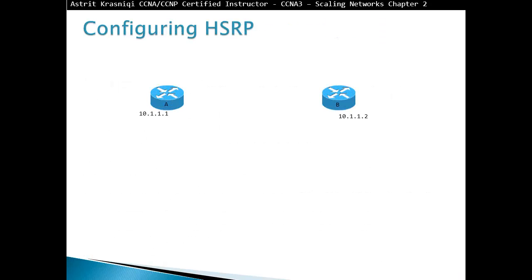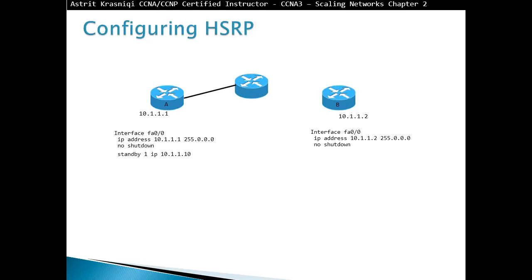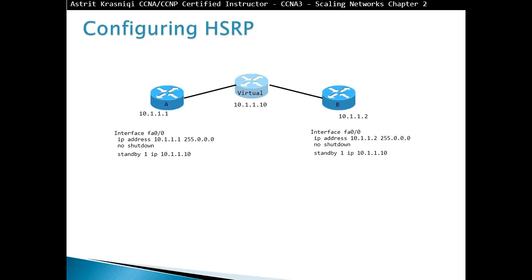To configure HSRP, imagine router A with IP 10.1.1.1 and router B with IP 10.1.1.2. You configure the interface normally with an IP address and no shutdown. When you enter 'standby 1' and assign an IP address, you are creating the virtual router. The virtual router gets IP address 10.1.1.10, which you then assign as the default gateway for your client machines. Both neighbor routers must use the same standby group number and the same virtual IP address to keep the virtual router alive. If left at default, the router with the highest IP address wins the election and becomes the active router — in this case, router B. But you can change the priority; setting router A to priority 110 makes router A the active router.